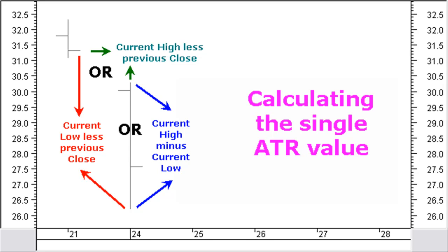ATR, or Average True Range, was developed by Wallace Wilder and introduced in his book, New Concepts in Technical Trading Systems, in 1978. The Average True Range indicator measures a security's volatility. Wilder defined the True Range as the greatest value of either the current high less the current low, the absolute value of the current high less the previous close, or the absolute value of the current low less the previous close. He then calculated an average of this value, creating the Average True Range.